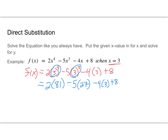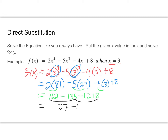Continuing with PEMDAS, we multiply: 2 times 81 is 162. 5 times 27 is negative 135. Negative 4 times 3 is negative 12, plus 8. Now putting it all together: 162 minus 135 gives me 27, minus 12, plus 8. Then 27 minus 12 is 15, plus 8. In the end we get 23.